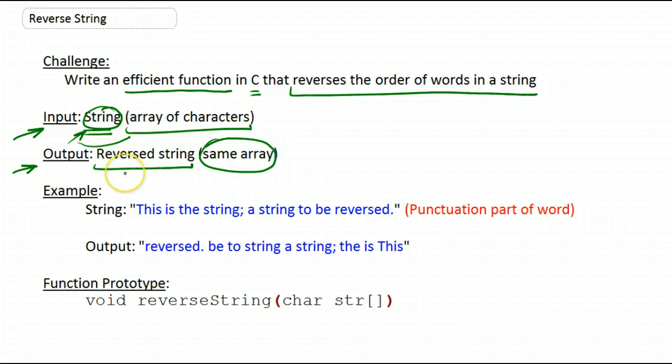Let's look at an example. Suppose this was a string given to your function: 'This is the string; a string to be reversed.' Then the output of your function will have to be the following: